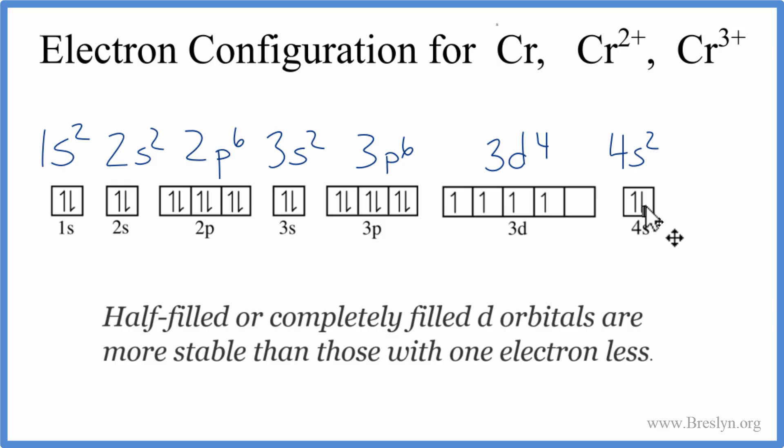To do that, we can take one electron here from the 4s and move it over. So now this 3d, it's half full. That's very stable. So now we have 4s1 and 3d5. So this is the electron configuration for Cr, for chromium.